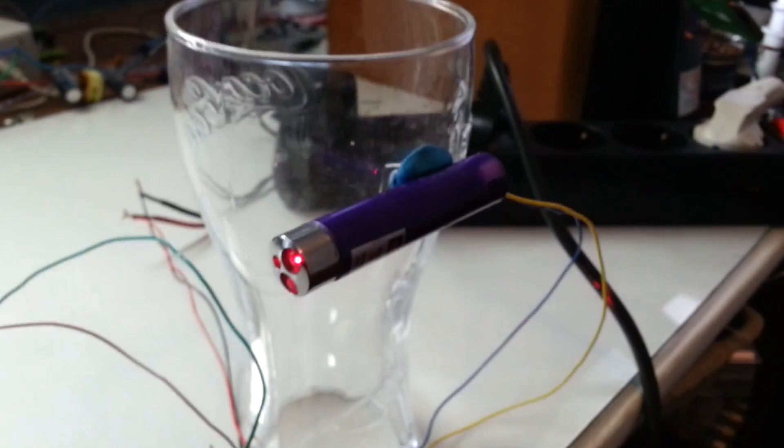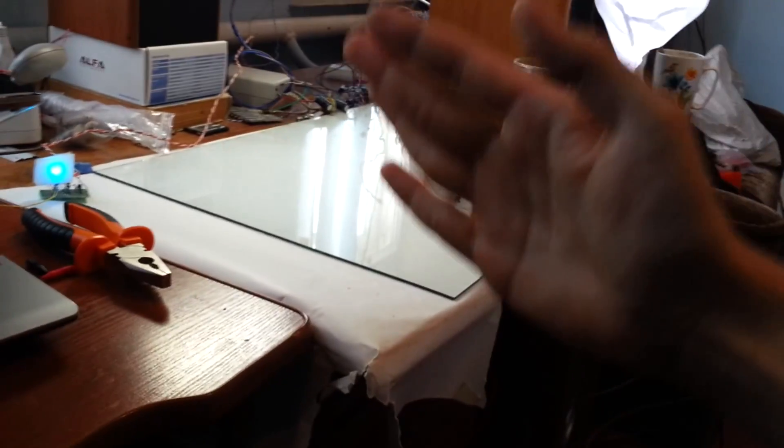Now I pointed the laser at a mirror, and the mirror reflects the light from the laser right at the light-dependent resistor. Let's see how it works this time.